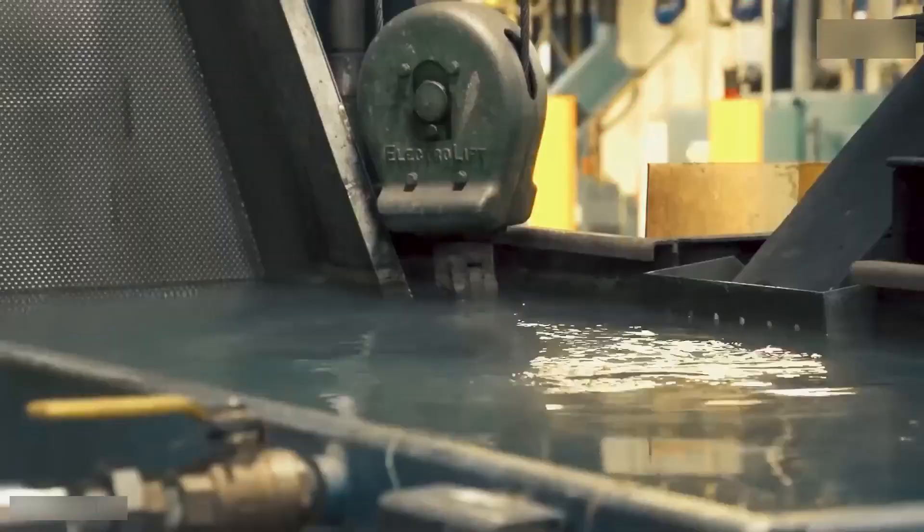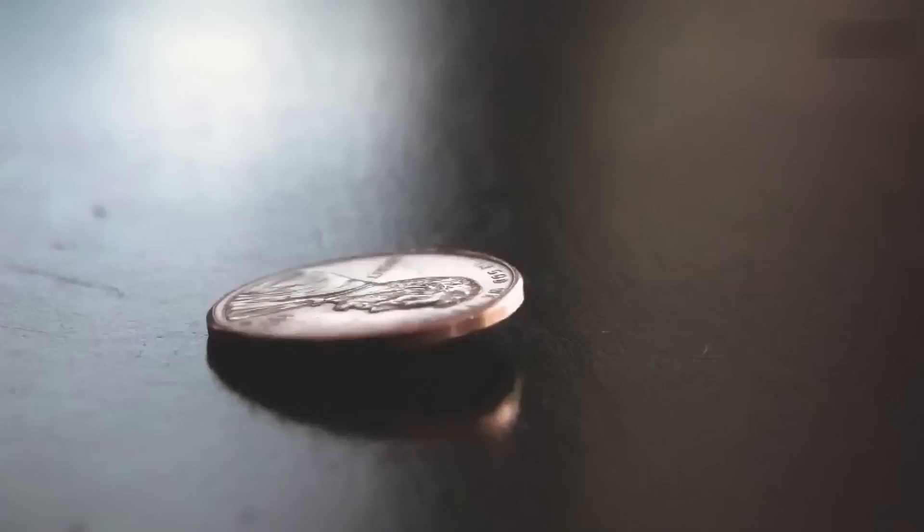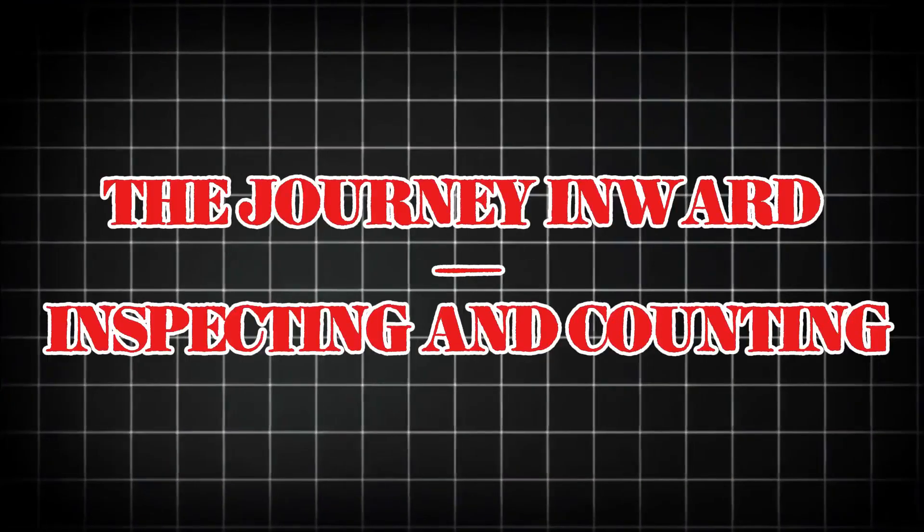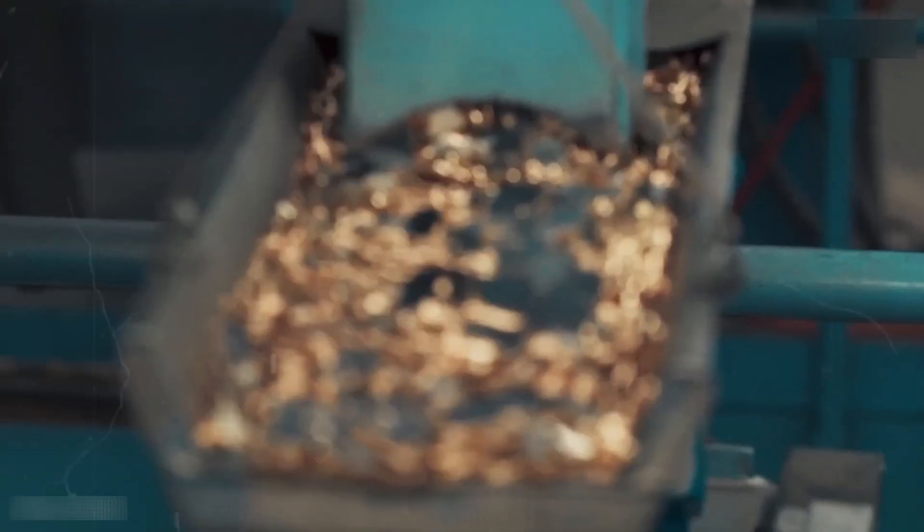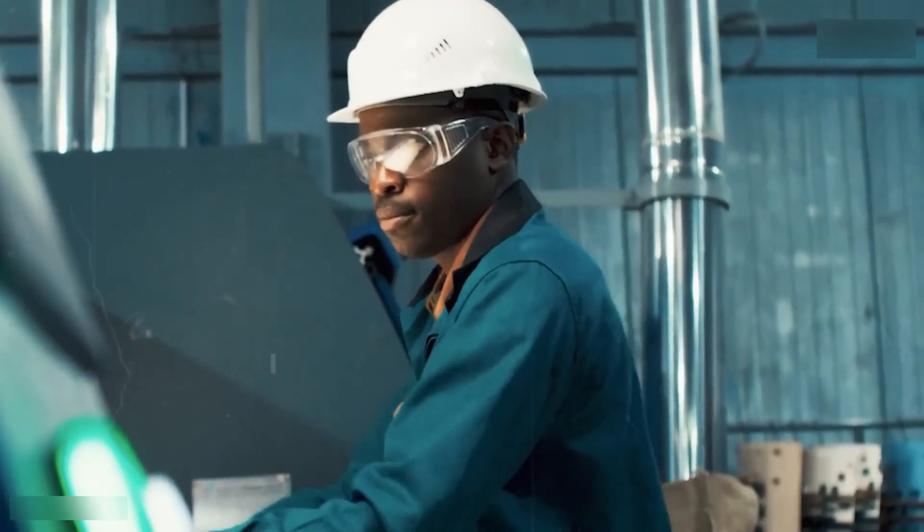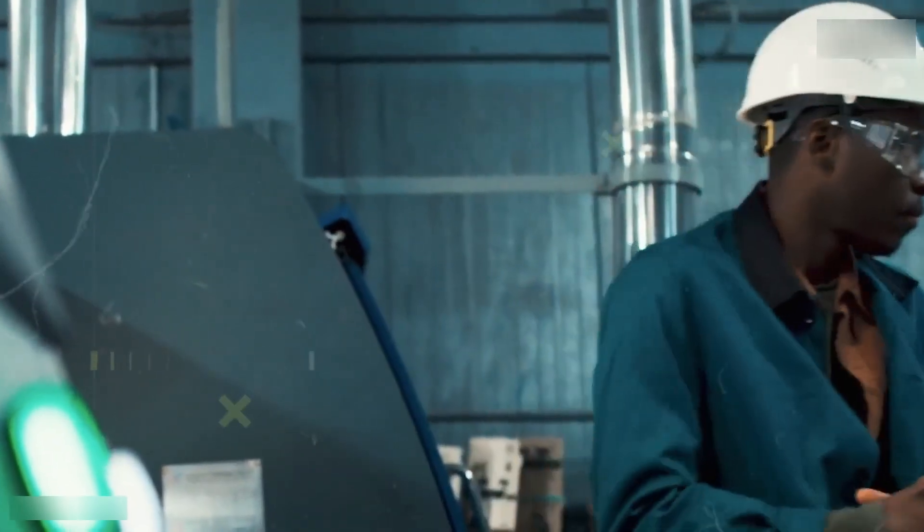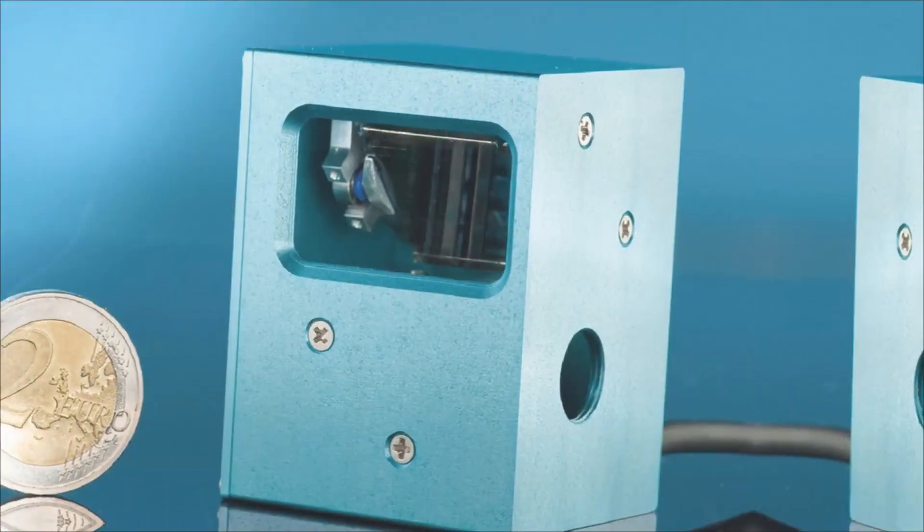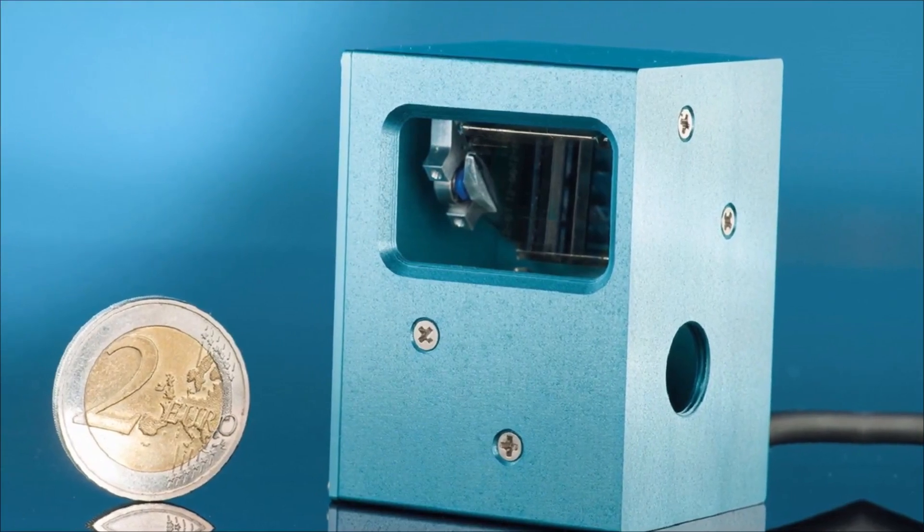The journey inward: inspecting and counting. After striking, coins take the next leg of their journey. They're inspected—no fuzzy faces or sloppy edges allowed. We're talking laser scanners, vision systems, and trained human eyes, all working to catch even the tiniest imperfection.